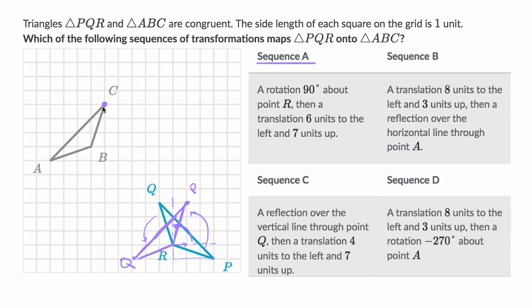Taking point P six to the left and seven units up puts it right over there — so that is point P. If we take point R, six units to the left and seven up, it gets us right over there.